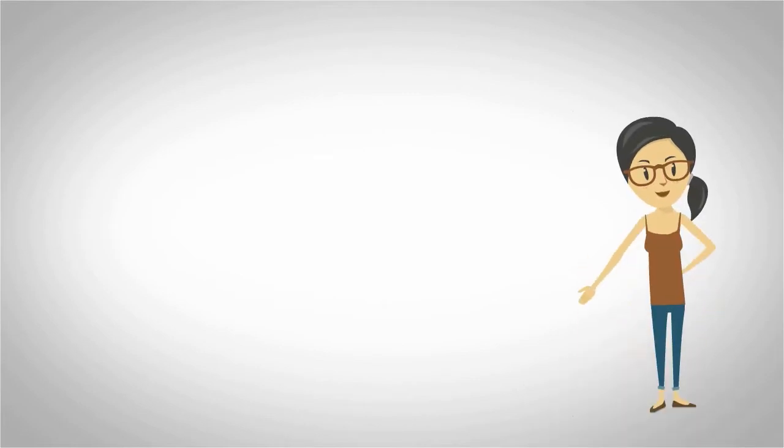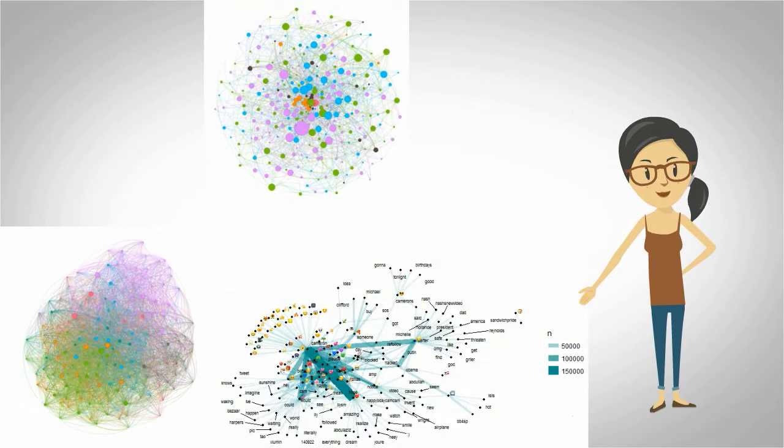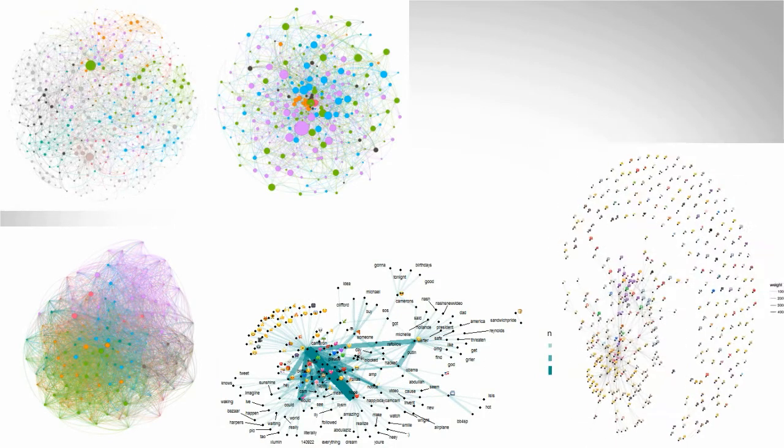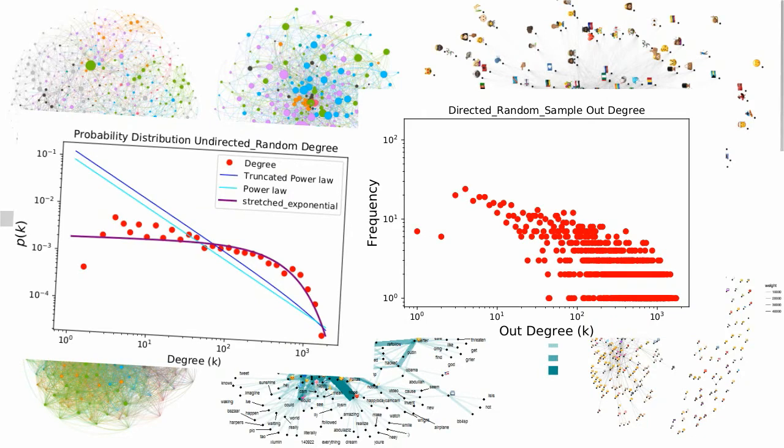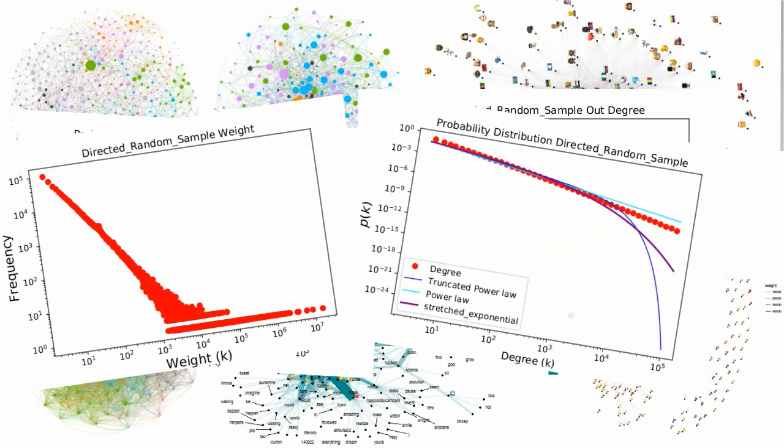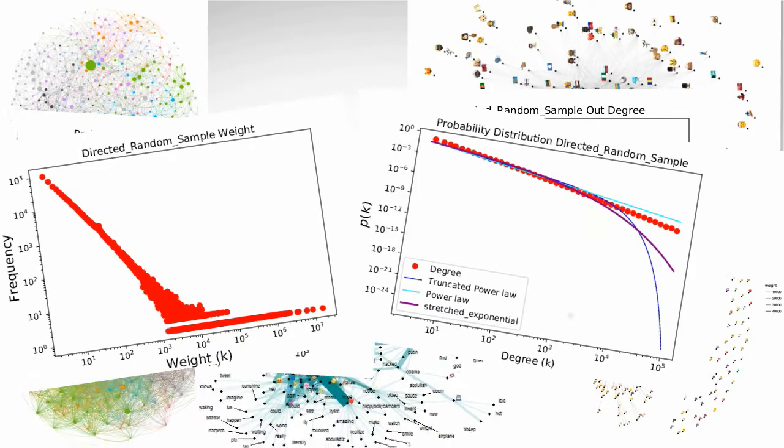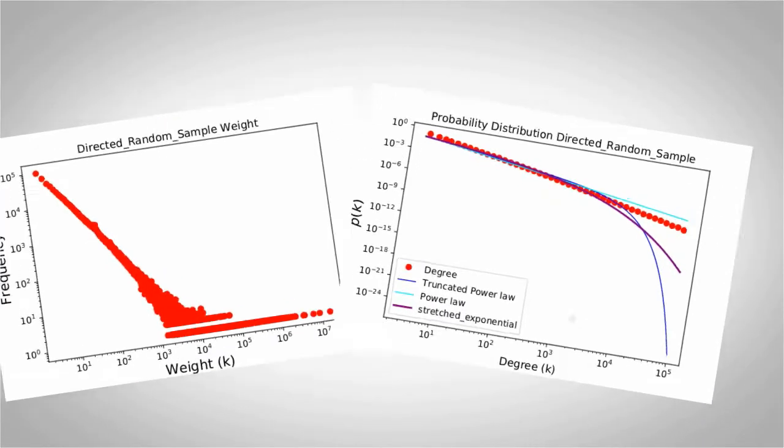In order to determine whether there is a structure to the way people use emojis, we created multiple complex networks that represent different ways to relate emojis to one another. We analyzed the distributions of these networks and used statistical tests to compare the structure of emojis across different tweet collections. We found that there is a consistent structure to the way people use emojis.